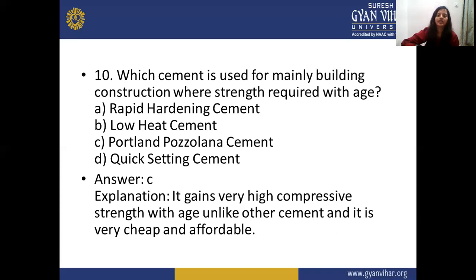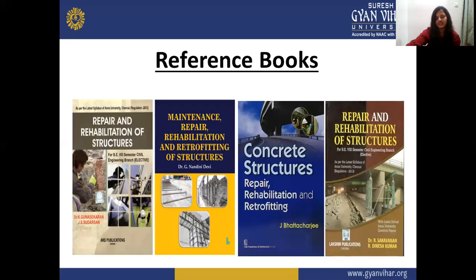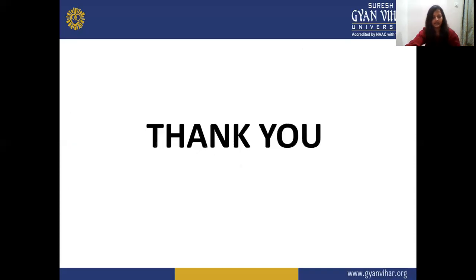Which cement is used mainly for building construction where strength is required with age? The answer is Portland pozzolana cement — a common conventional type of concrete with very high compressive strength with age. Unlike others, it is very cheap and affordable. These are some reference books. Thank you.